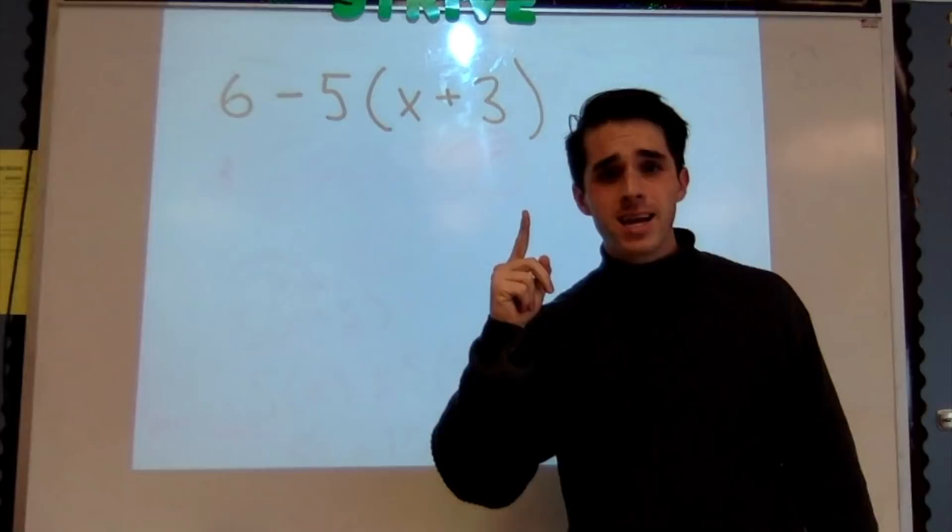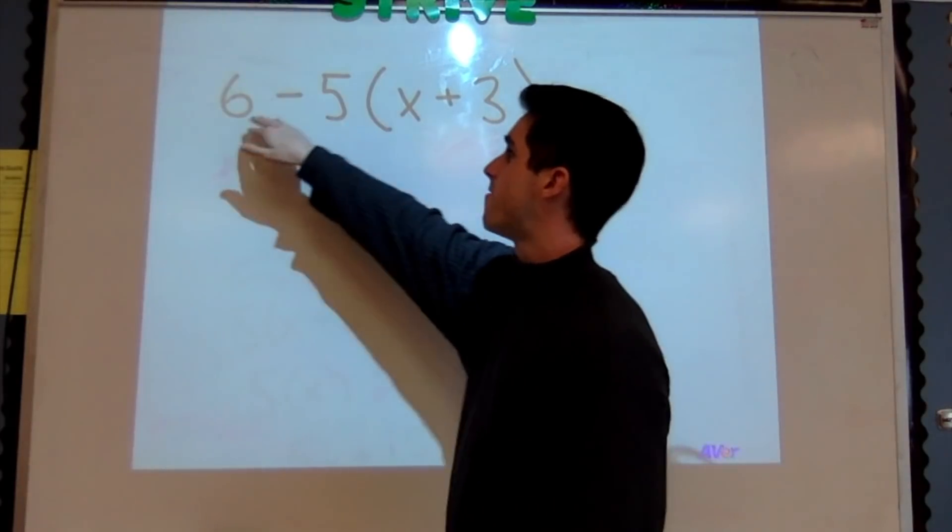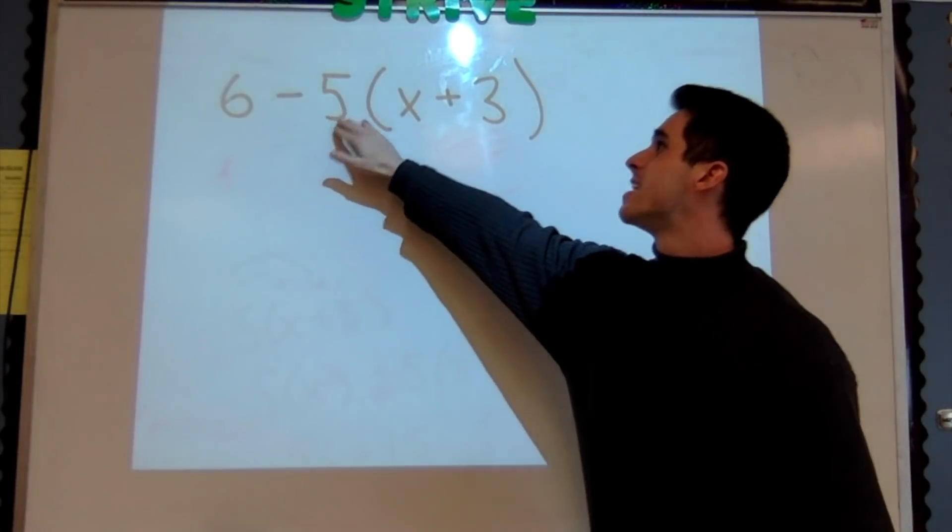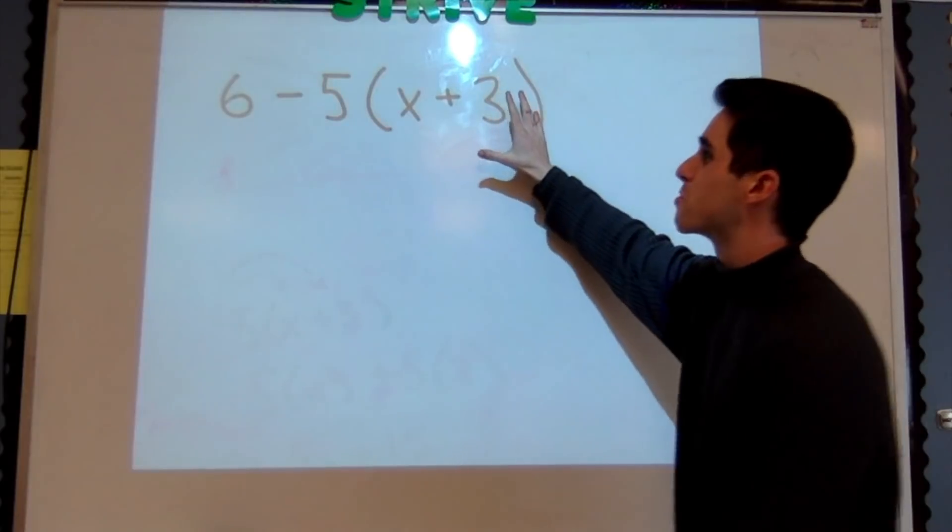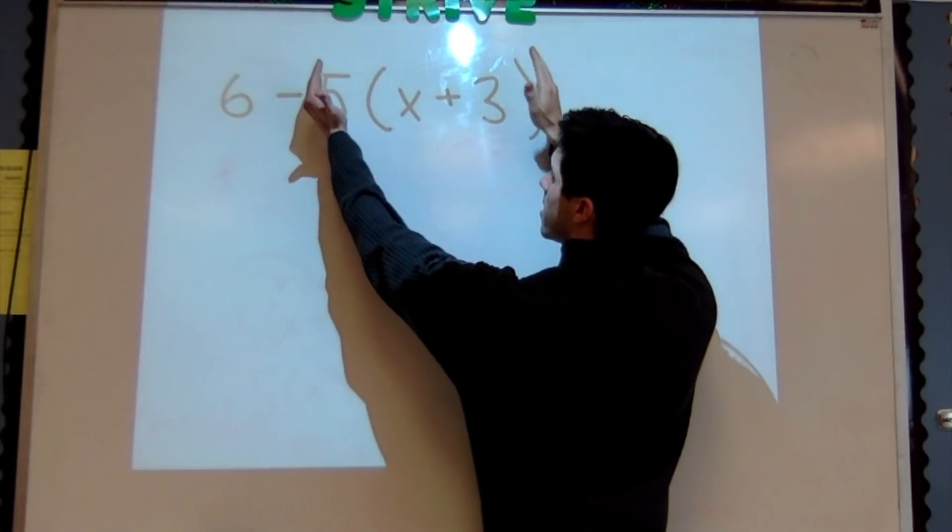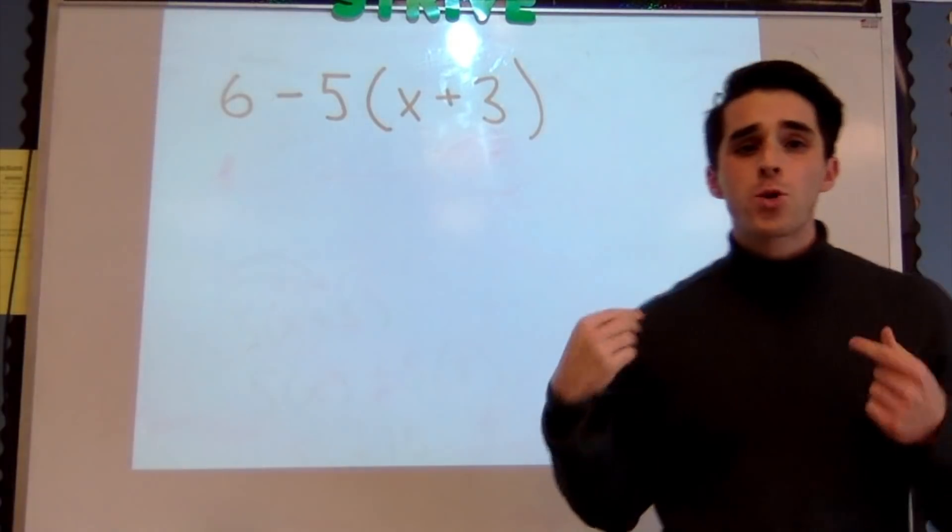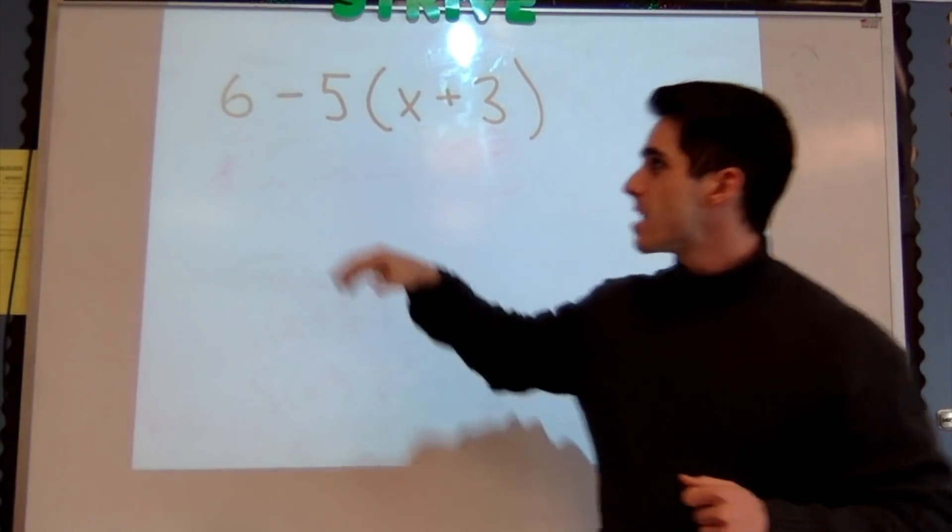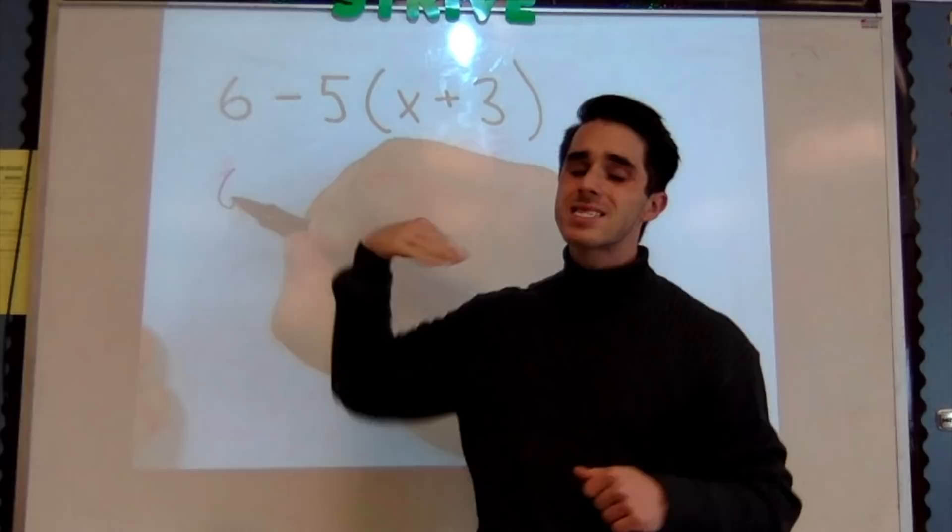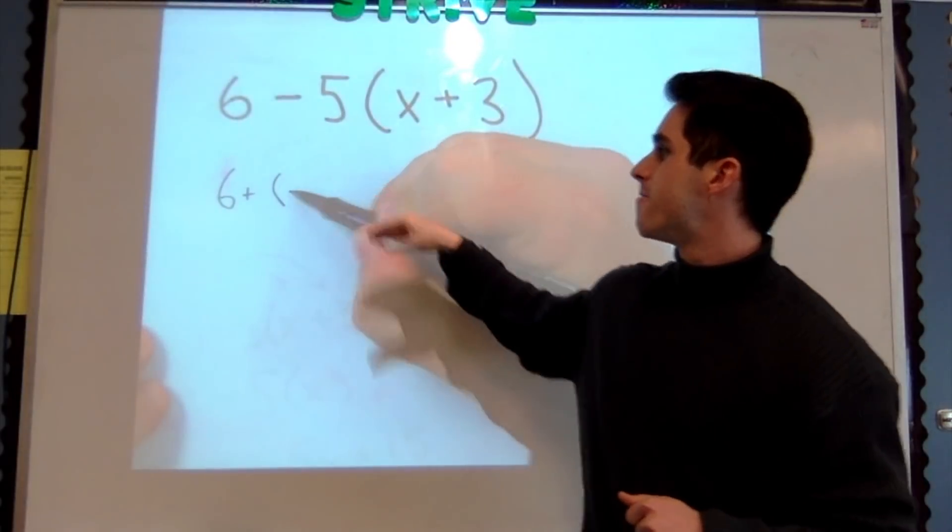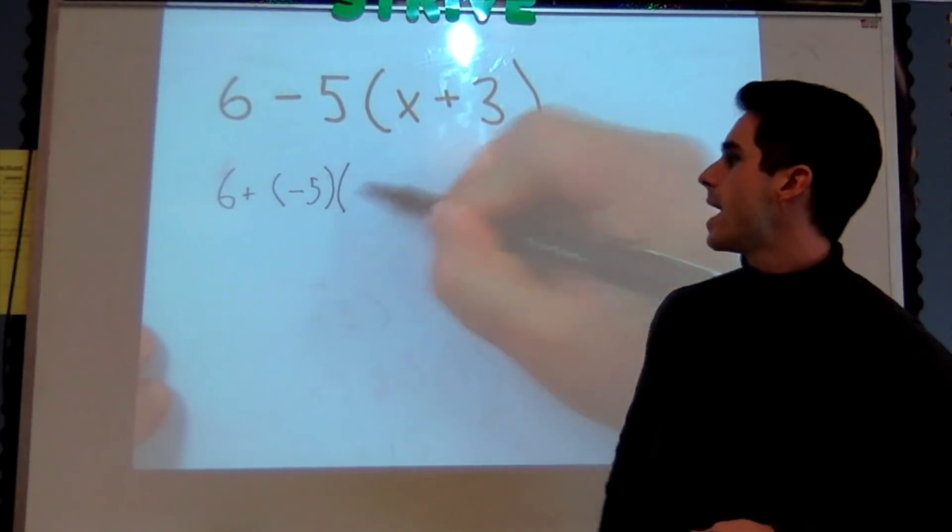So I know what I'm not gonna do is subtract 5 from 6, because this 5 is attached to this (x + 3). We can think of this as one giant number right there. So first I'm going to rewrite this expression as, instead of 6 - 5, I'm going to write 6 + (-5)(x + 3).